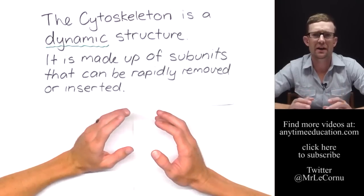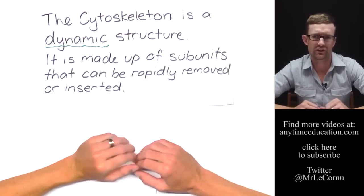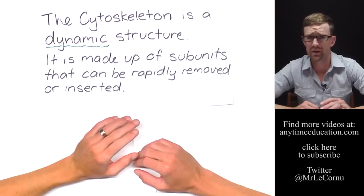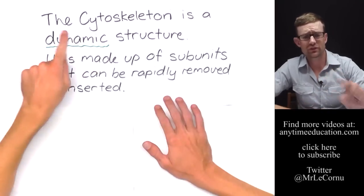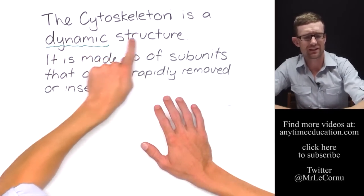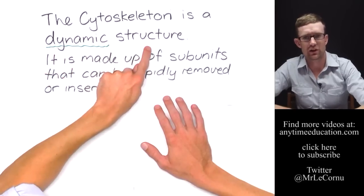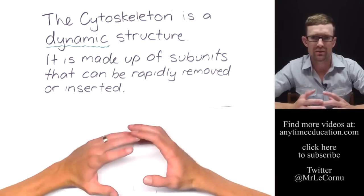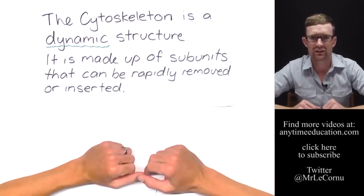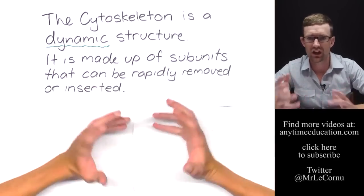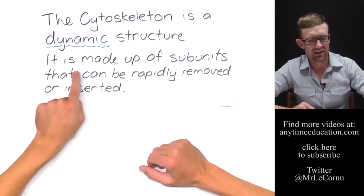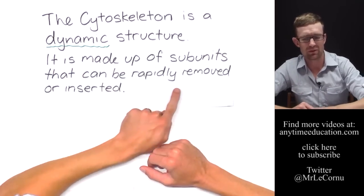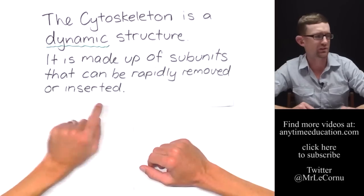So we've just talked a lot about the function of the cytoskeleton. Let's talk a little bit about its structure. First of all, this point, the cytoskeleton is a dynamic structure. Dynamic means it is changeable. It's able to increase and decrease. It's not static. It's changing and changeable. It's made up of subunits that can be rapidly removed or inserted.